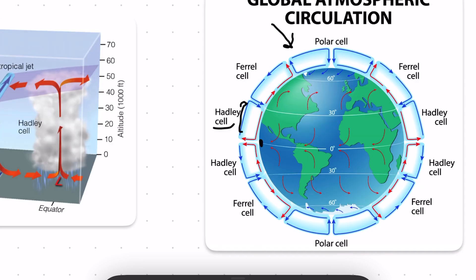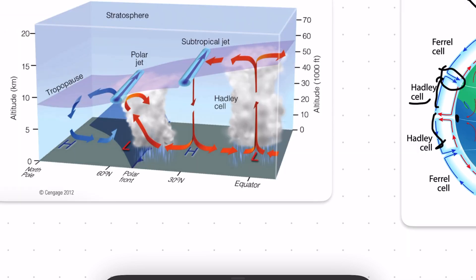But eventually, this air falls back to the surface, creating high pressure. And having perpetual high pressure caused by sinking dry air that pushes moisture away is a crucial factor in the formation of deserts.